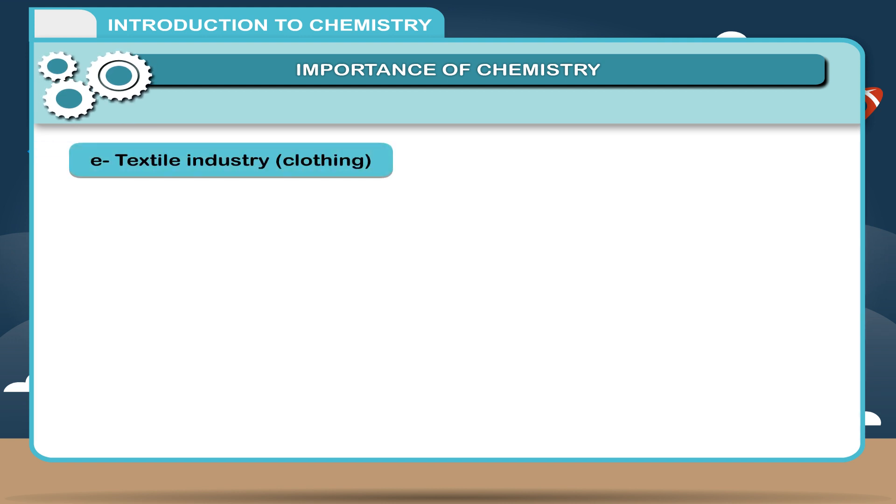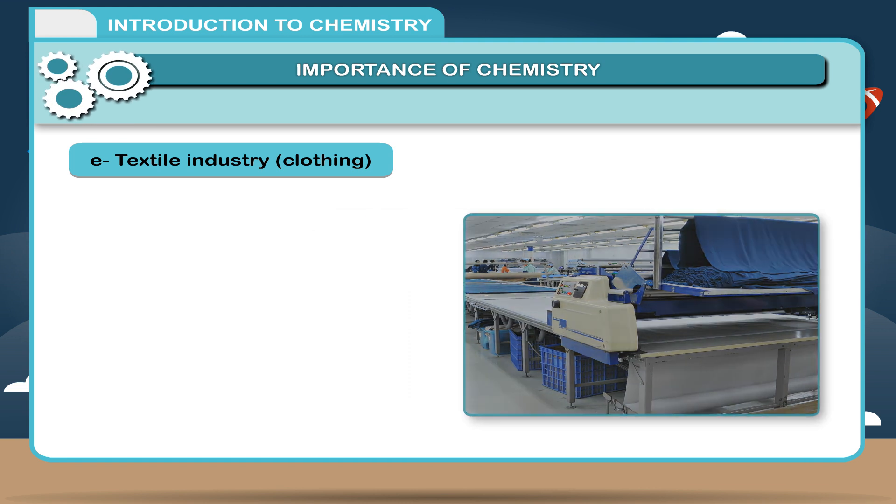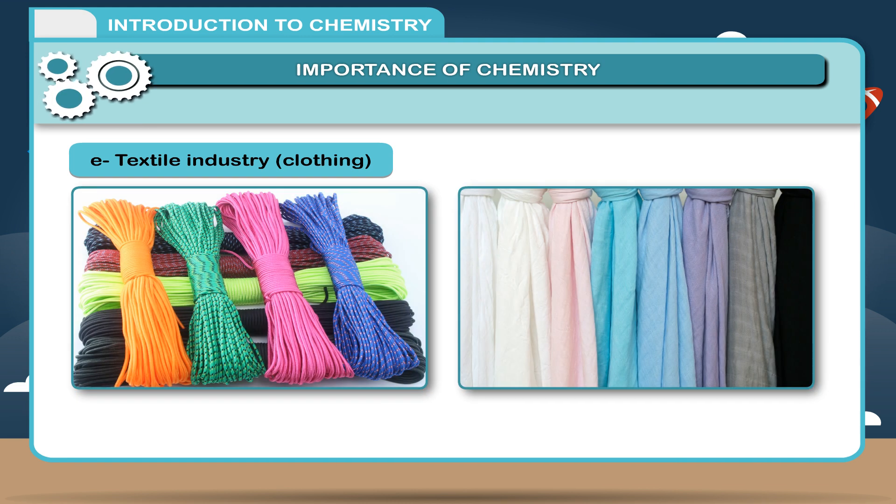E. Textile Industry. Dyes used in textile industry are a product of chemistry. Clothing materials like nylon, rayon, etc. are synthetic fibers developed from chemicals.